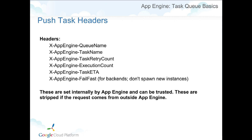When tasks are actually calling your application, there are a few different headers automatically added. The App Engine system automatically strips anything that resembles these headers if someone tries to spoof a request, so if these headers exist, you can rely on them being added by the infrastructure and not by someone trying to trick you. The headers include the task name, the queue name, the retry count, the execution count, and the task ETA, which is roughly how long until the task will be executed.